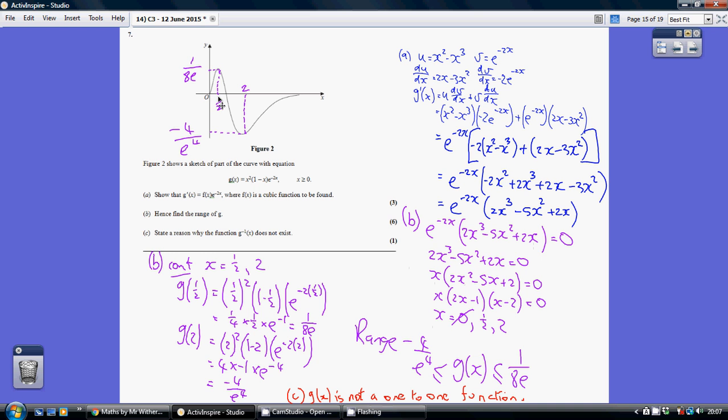Substituting these two x values back into the actual curve itself, I get my y values of 1 over 8e. When x is 2, I get my y value of minus 4 over e to the 4. So the range of the function g(x) is greater than or equal to minus 4 over e to the 4, but less than or equal to 1 over 8e.